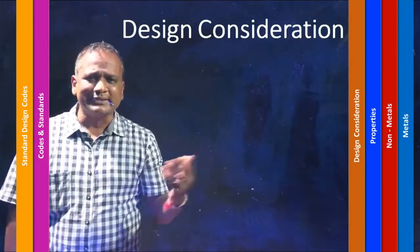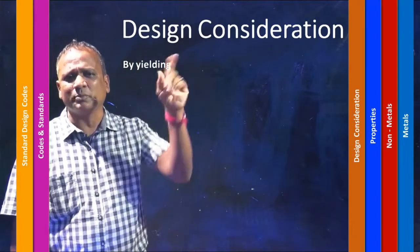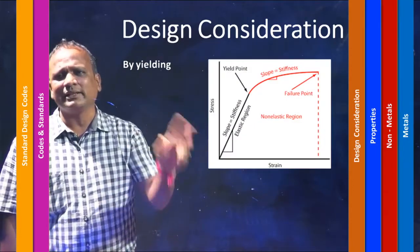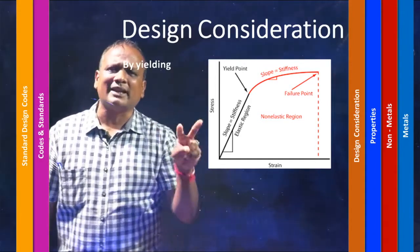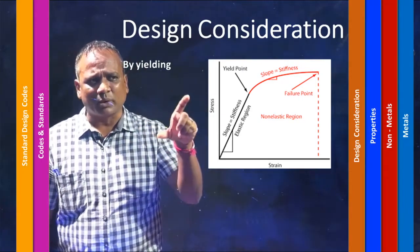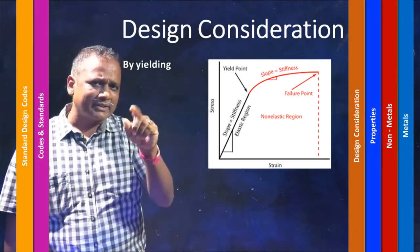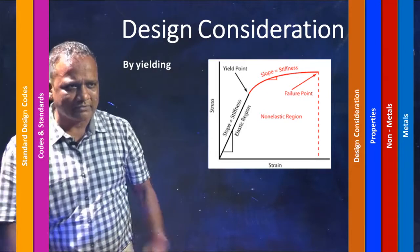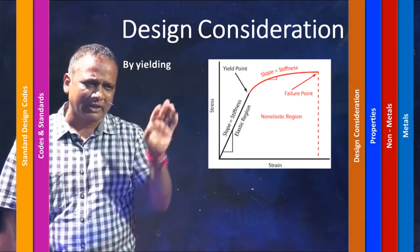Next would be design considerations — things to consider before designing an element. First would be its yield point. On a stress-strain diagram, there is a proportionality line within the elastic limit where stress is directly proportional to strain. The point where the elastic region transforms to a plastic region is called the yield point — this applies to ductile metals.